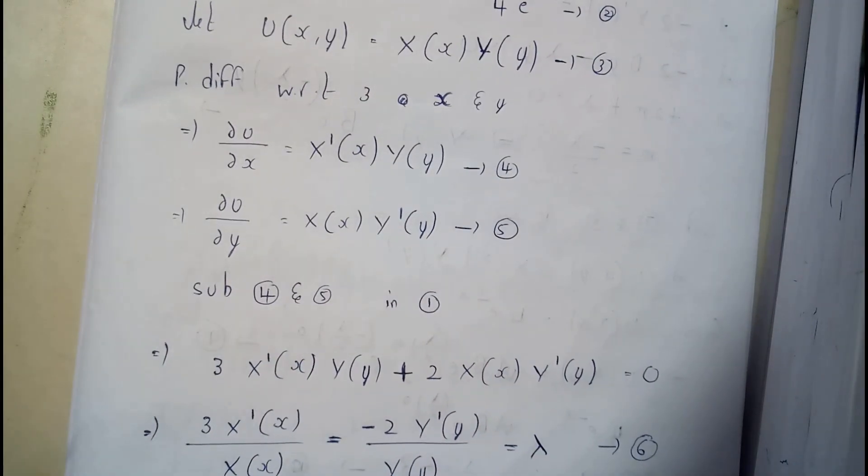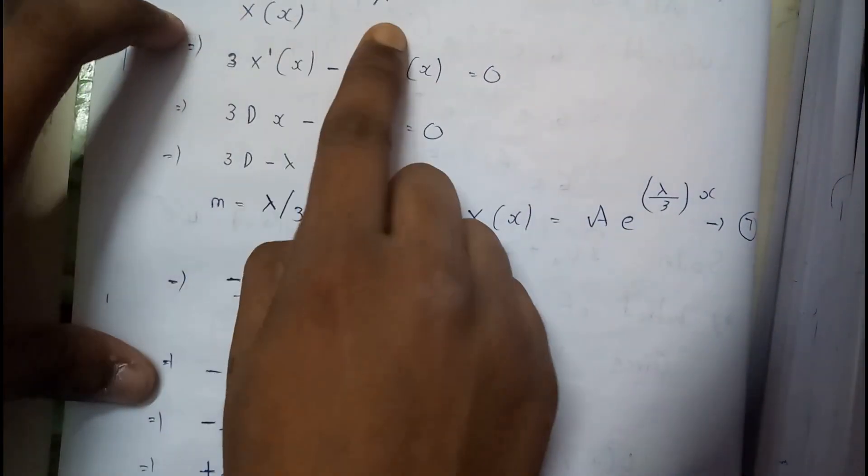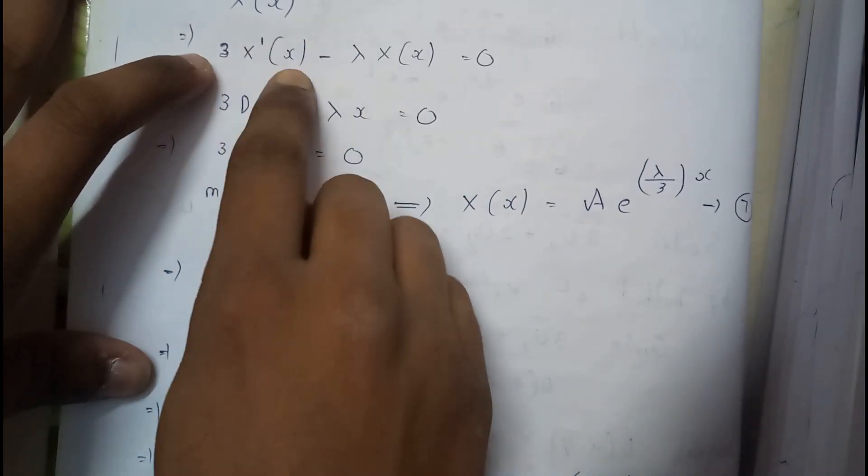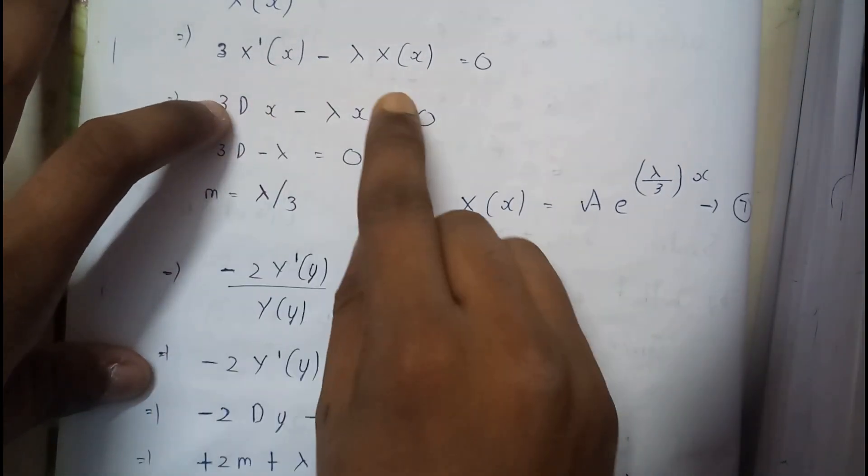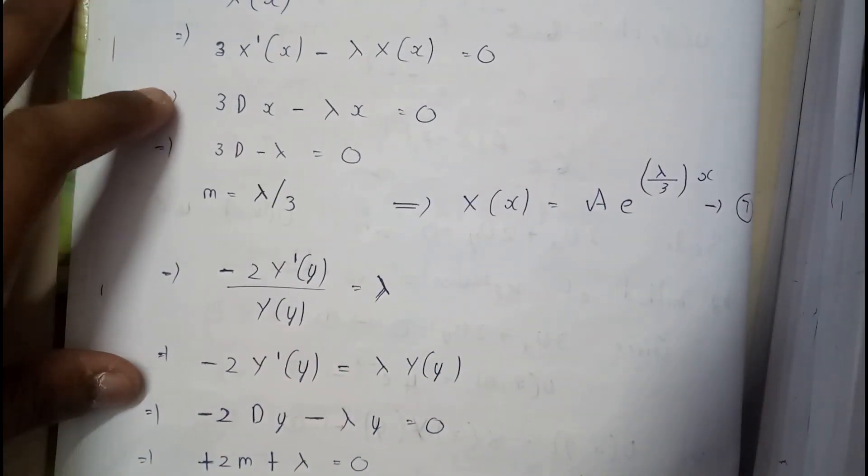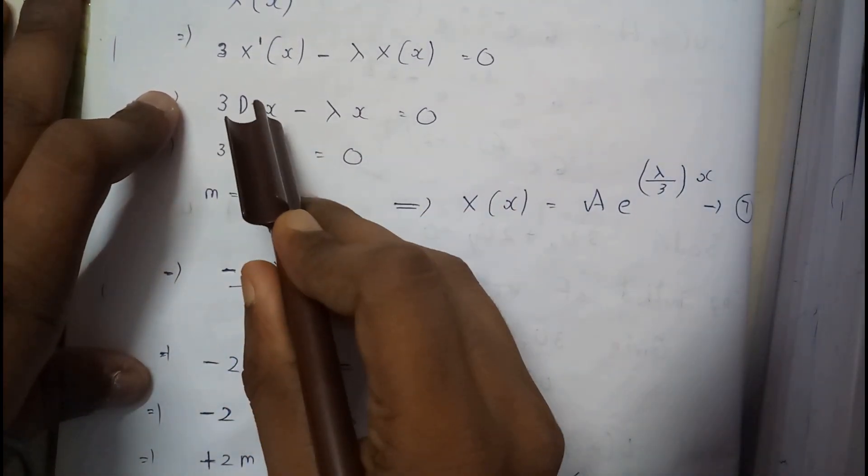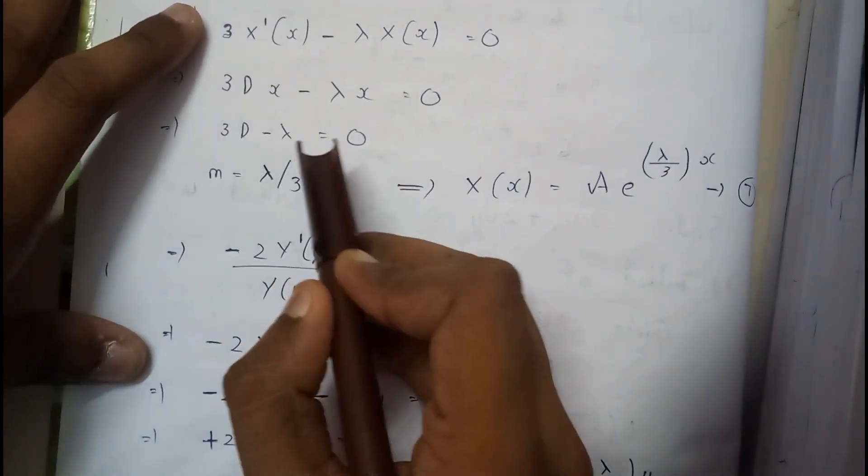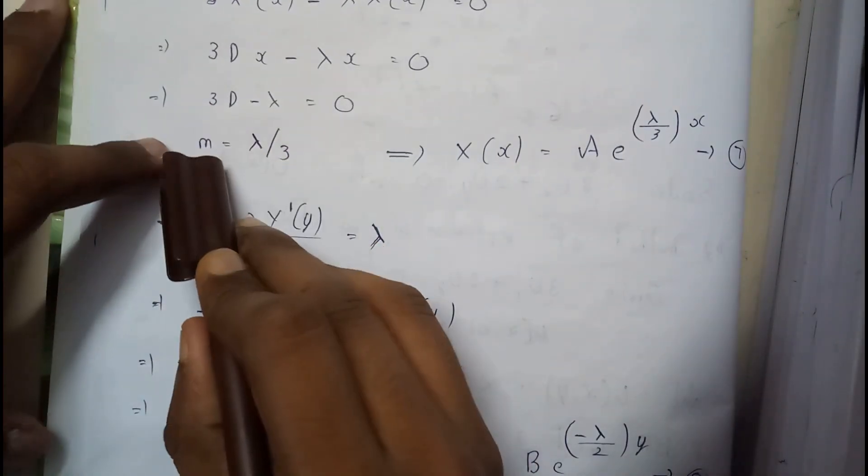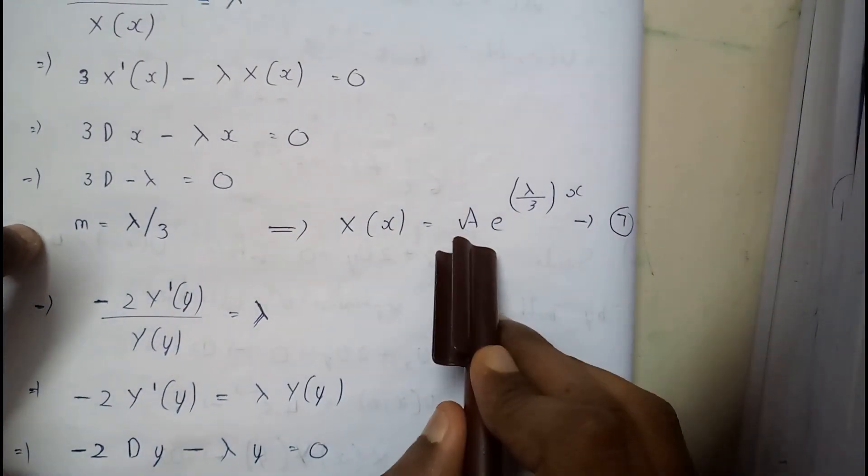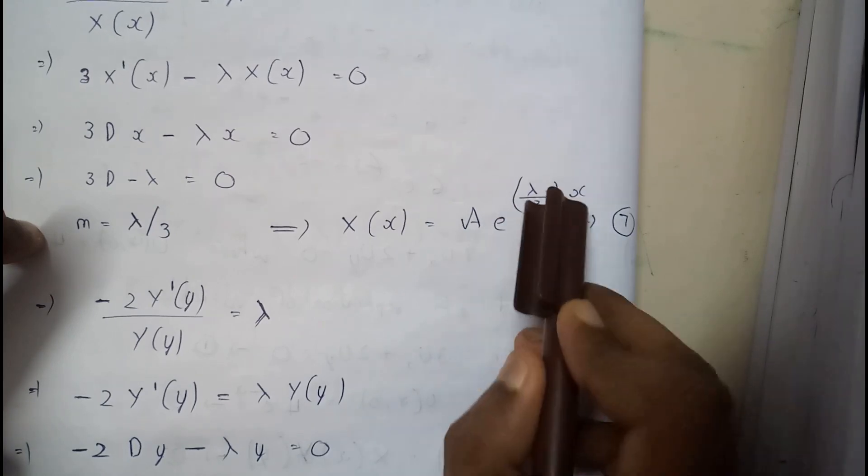Initially I will take the first and third terms. X'(x) over X(x) equals d, which equals 1. We will take common x so that it becomes 0. So 3d minus lambda equals 0, which gives m equals lambda over 3. The equation will be A e^(lambda x/3).